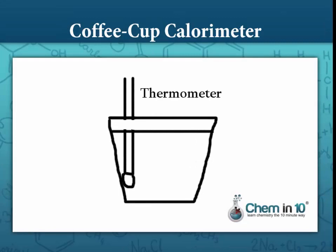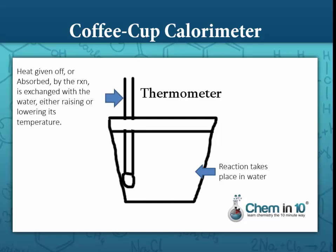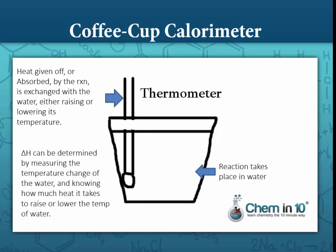In a coffee cup calorimeter, you have a styrofoam cup with the reactants and products inside and a thermometer. The reaction takes place in water. If the reaction gives off heat, that heat is absorbed by the water and the temperature rises. If the reaction absorbs heat, that heat is taken from the water and the temperature drops. Delta H can be determined by measuring the temperature change and knowing the specific heat of water.